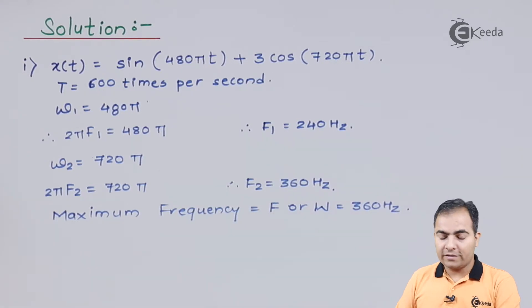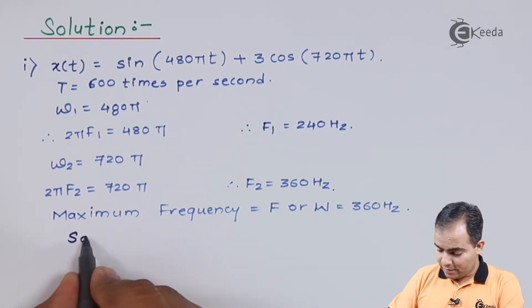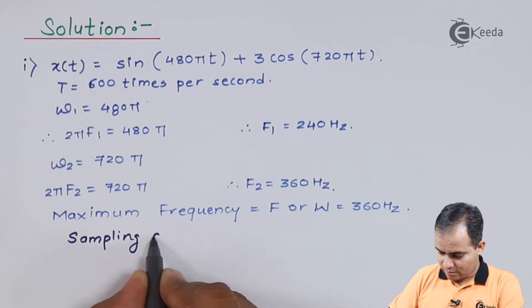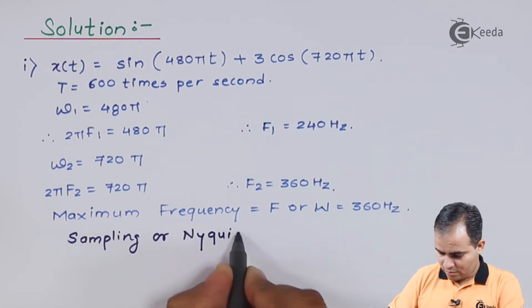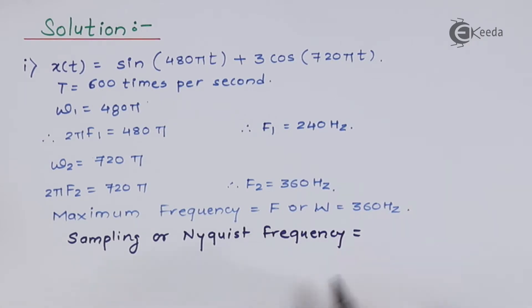This is our maximum frequency. Now we will calculate the sampling frequency, or Nyquist. This Nyquist frequency is always twice the maximum frequency, so 360 into 2 gives 720 Hz.